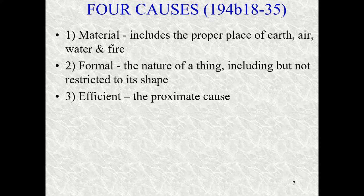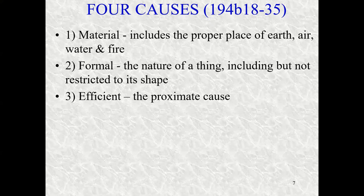An efficient cause is a proximate cause — that last thing that puts something in motion, that last step that changes something. For example, in a Rube Goldberg machine where you go through all those steps and the last step is to swing a hammer and break a glass, it would be that hammer breaking the glass. That action is the efficient cause. Some of the preceding things are causes in another sense. An efficient cause is whatever puts something in motion.